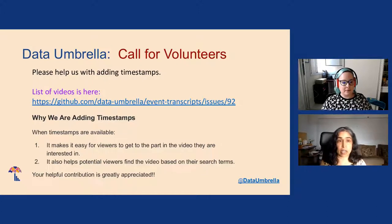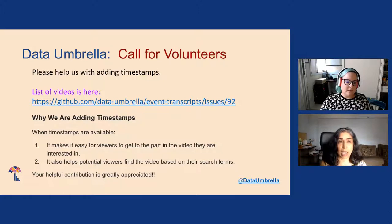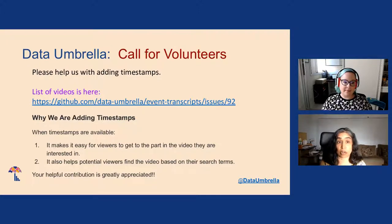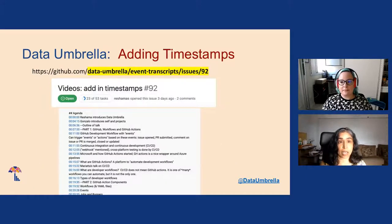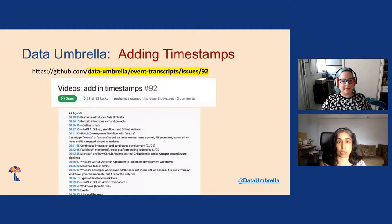We have a call for volunteers. We have a library of about 56 videos now, and if you are available and interested, we would most graciously invite your help to add timestamps to the videos. These timestamps make it easier for viewers to get to the part they are most interested in, and also help potential viewers find the video based on their search terms. We have a GitHub issue in the repo event-transcripts data-umbrella where you can see examples and instructions.